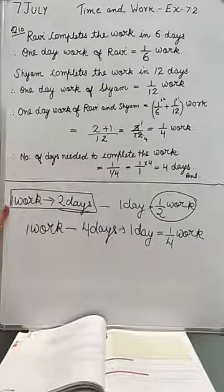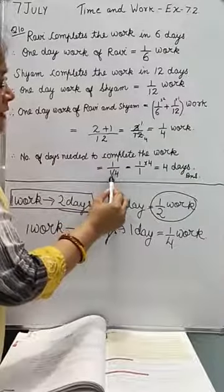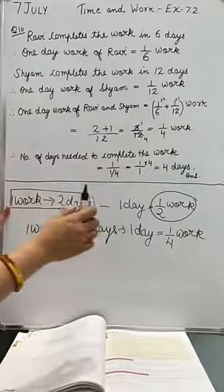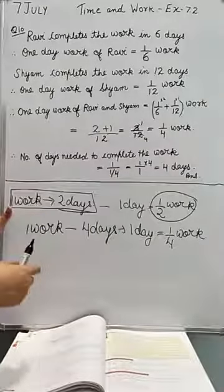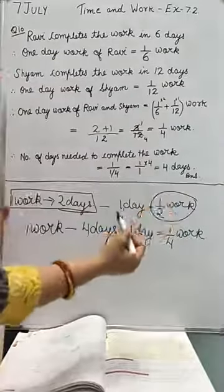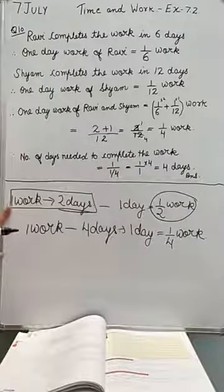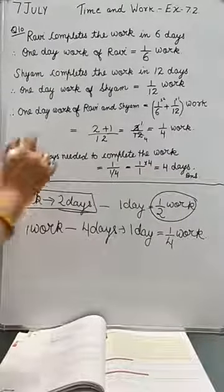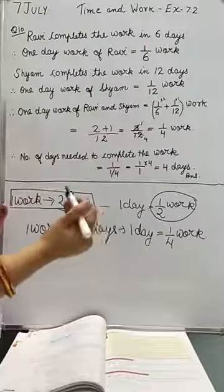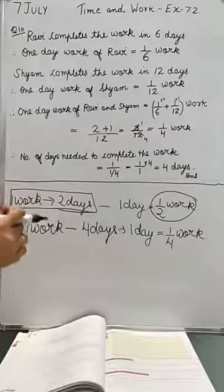How many days do they need to complete the work? The total work is 1, divided by their one-day combined work of one-fourth. When you solve it, you get 4 days. So the answer to this question is 4 days. Ravi alone takes 6 days, Shyam alone takes 12 days, but when both work together it takes only 4 days.